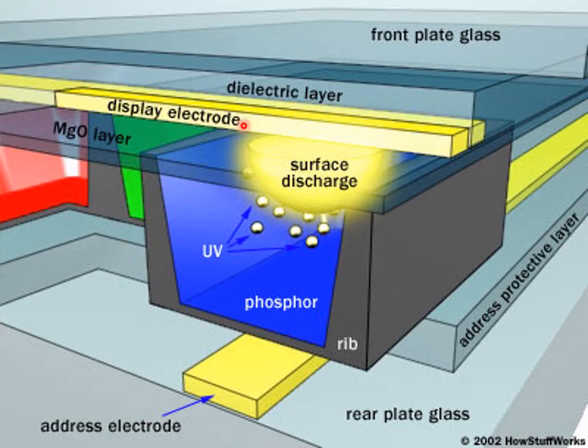The processing unit of the plasma displays produce charges in the electrodes that intersect at the individual cells according to the received signal. When the intersecting electrodes are charged, an electric current flows through the gas in the cell due to the voltage developed across it. This current creates a rapid flow of charged particles, which stimulates the gas atoms to release ultraviolet photons.